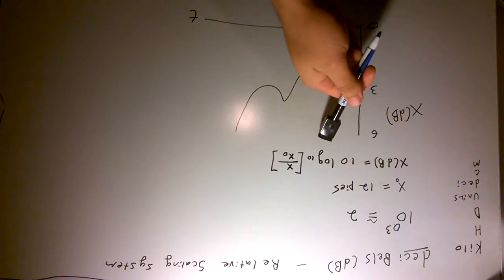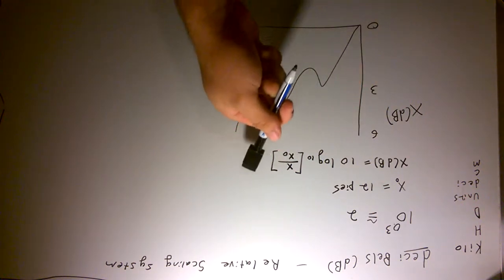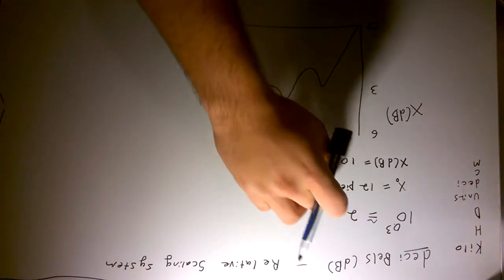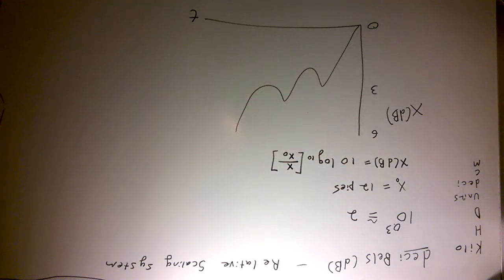Ten times log base ten of x over x naught, your base number. So we can evaluate this at different points to figure out how many pies we have if this is our pie distribution over time.